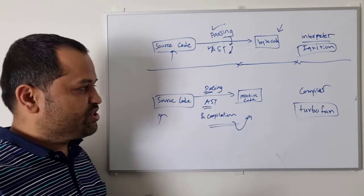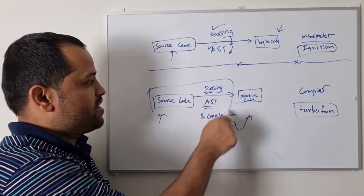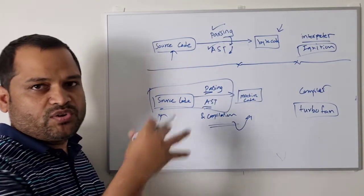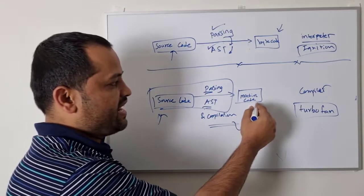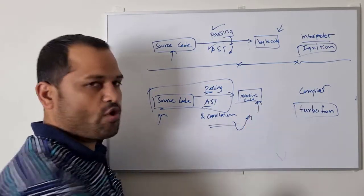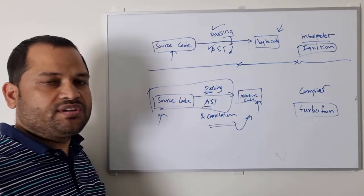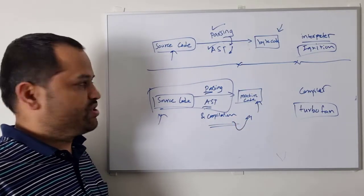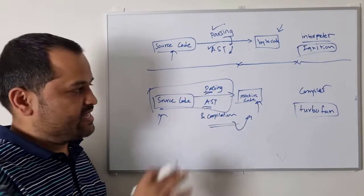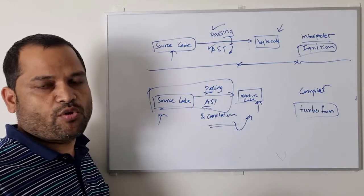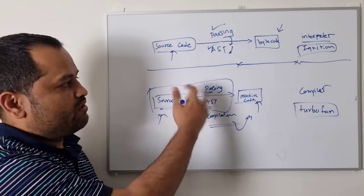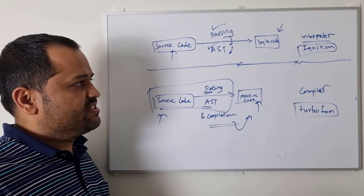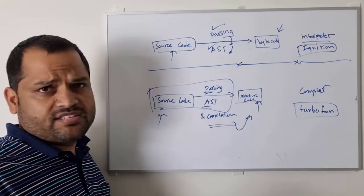But in the case of compilation, these steps happen only once. Once you compile the source code and it is running in machine code format, next time you want to execute it, it goes to the machine code and gets executed. That's it — there is no parsing, there is no abstract syntax tree formation. All these steps are not happening every time, and that's the reason why the compiler is much faster.